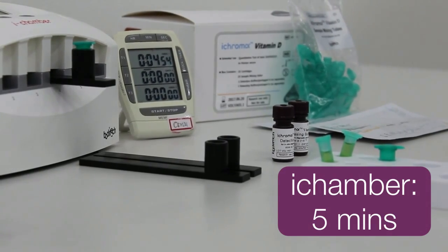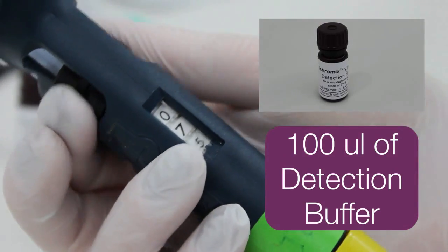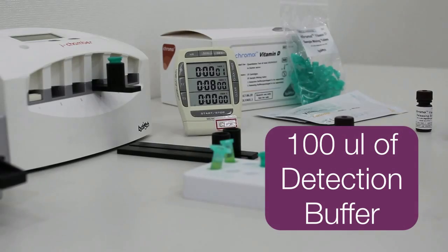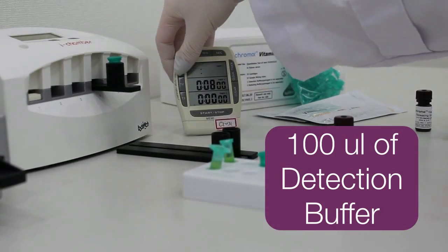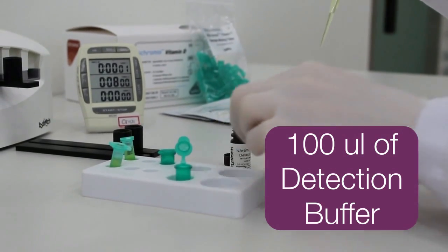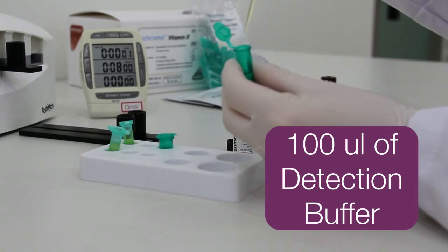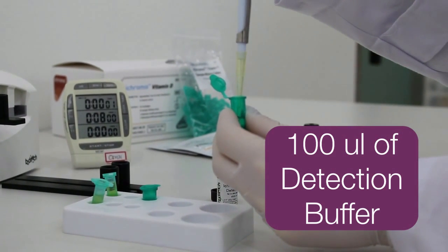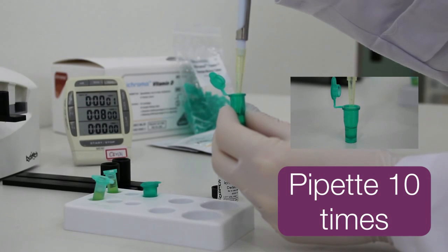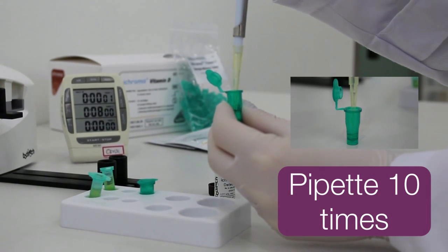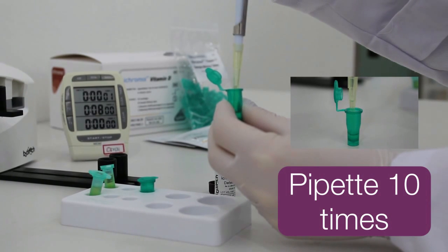After 5 minutes, add 100 microliters of detection buffer using a new pipette tip to the tube containing the releasing buffer and sample mixture. Mix well by pipetting 10 times and leave it in the incubating tube block again at 35 degrees Celsius for 15 minutes.